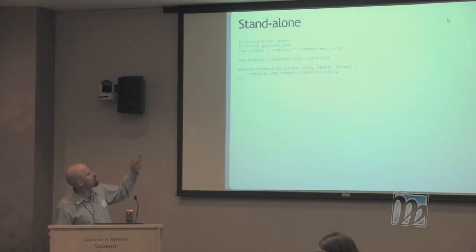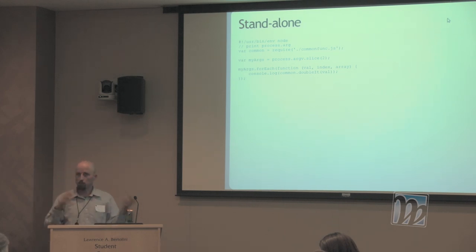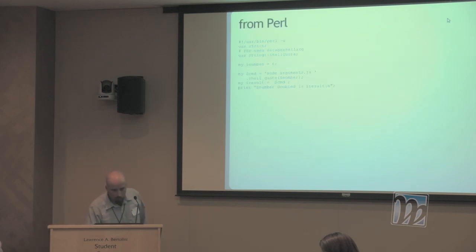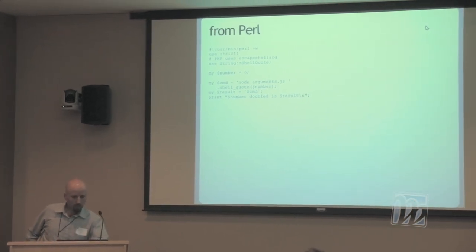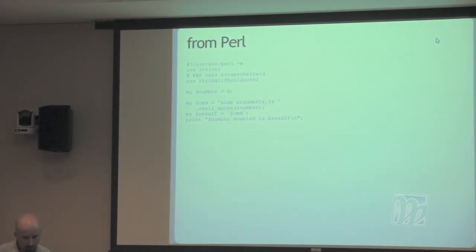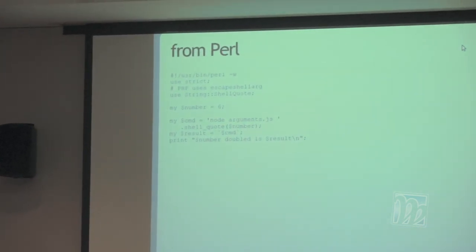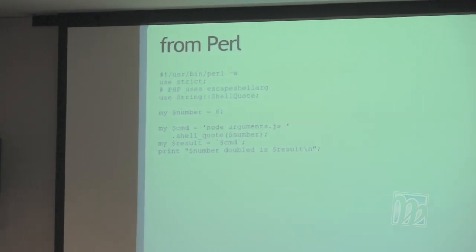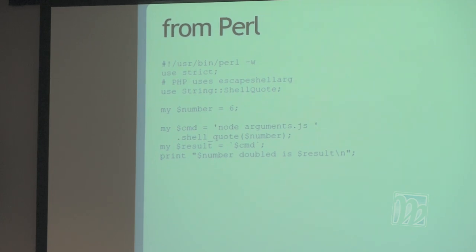You can give the script a name and it will find the first argument and run that script with the name. And here's the Perl side: it quotes out the argument so you don't end up with a shell injection attack, then using the backtick operator puts the output from this command into a result variable and prints that out. And that's the first place where it's really easy to share code between your model and your view.